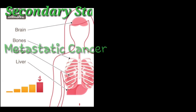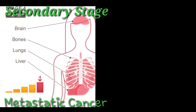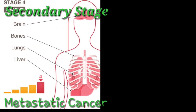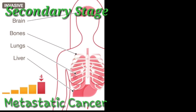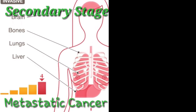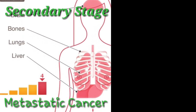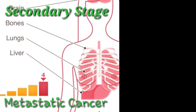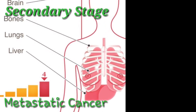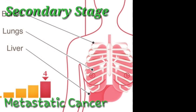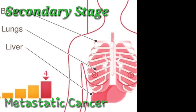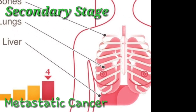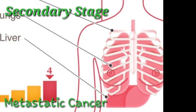When cancerous cells break down and go to other organs of the human body through blood, then cancer is spread to other organs also. This is called the secondary stage of cancer, and it is also called metastatic cancer. This secondary stage of metastatic cancer is the 4th stage.